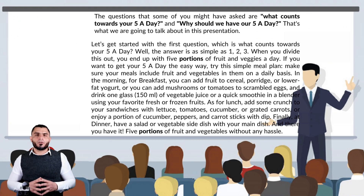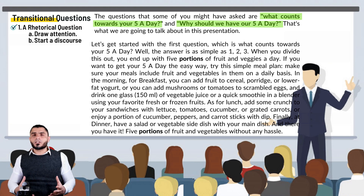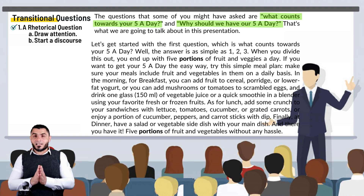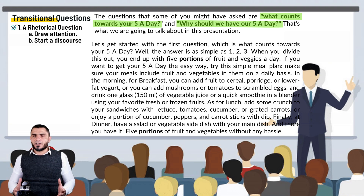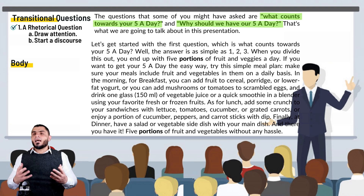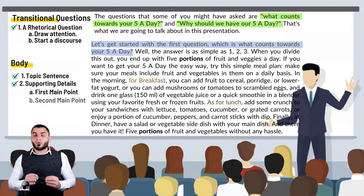The next part of the presentation is the transitional question. It is intended to help move from the general background to the body parts. Another way to do that is by asking a rhetorical question — a rhetorical question is one which aims at drawing people's attention and interest rather than getting an answer; it is intended to start a discourse or to put across the speaker's intention. Since my presentation is about what counts towards your five a day and its benefits, I have asked two rhetorical questions, each referring to one idea and one paragraph. This paragraph here is the first main idea of the presentation. Like any other paragraph, it is composed of a topic sentence, supporting details, and a concluding sentence — so keep this in mind.